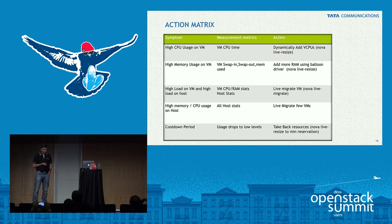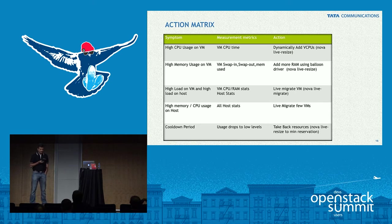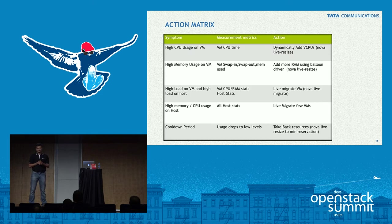If we see high CPU usage in the VM, the measurement metric is VM CPU time, and the action is calling our live resize API to add CPUs. Same for memory: if there's high memory usage, the metric is either a threshold of memory used or seeing swap in/swap out — meaning memory is under pressure. It's time to add more memory, so we use live resize to add more RAM through the balloon driver.